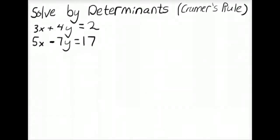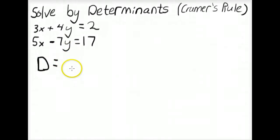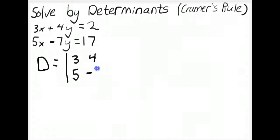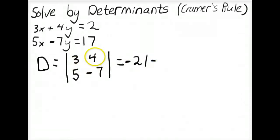Now for this system of equations, we'll solve using second-order determinants, otherwise known as Cramer's Rule. The first thing is to figure out the denominator D for both X and Y. The denominator is the determinant of the X and Y coefficients: 3, 5, 4, negative 7. Expanding, we multiply 3 times negative 7 to get negative 21, minus 5 times 4 which is 20, giving negative 41.